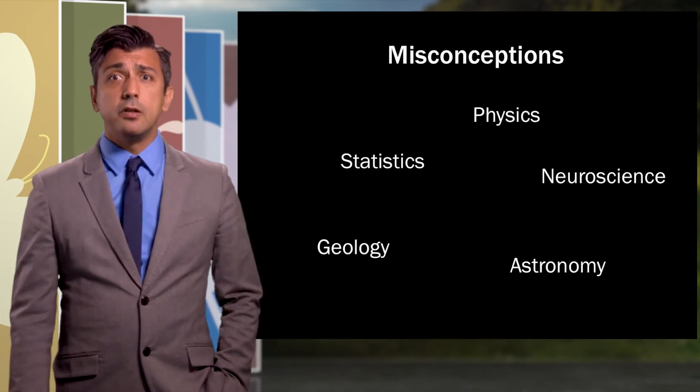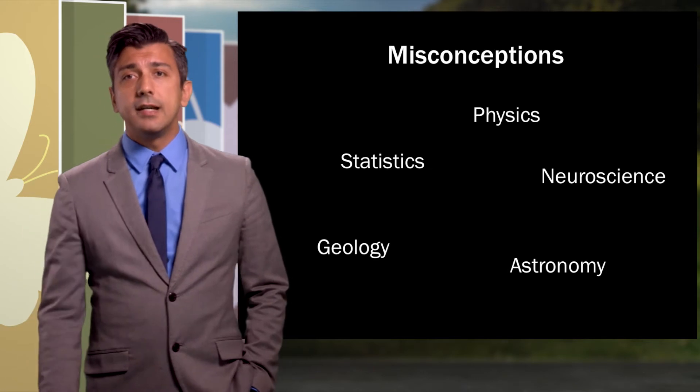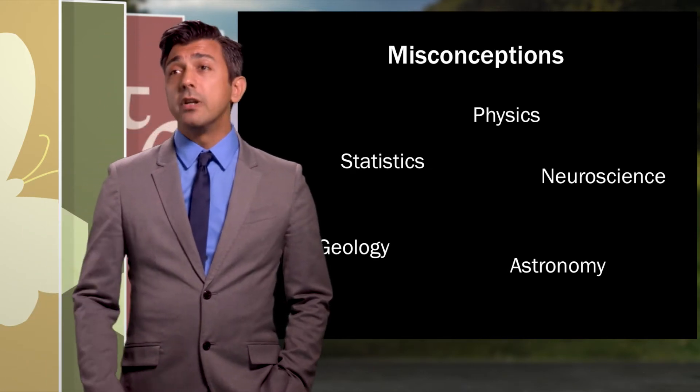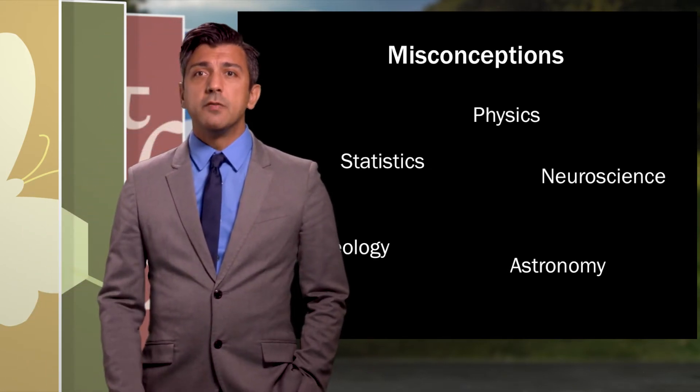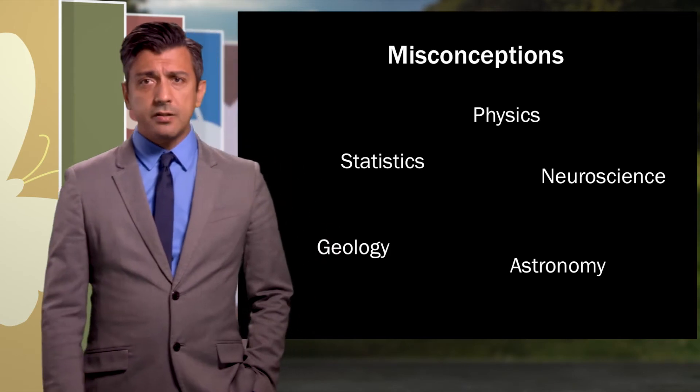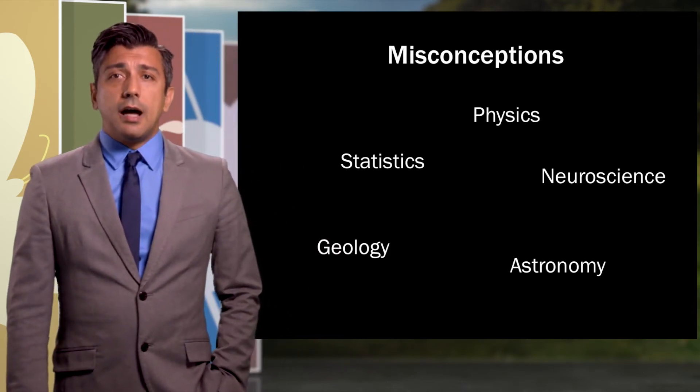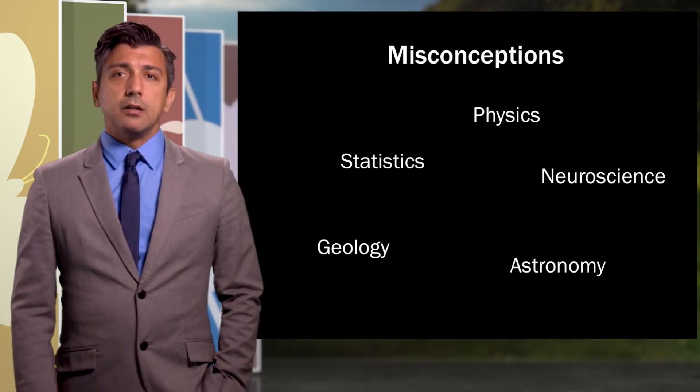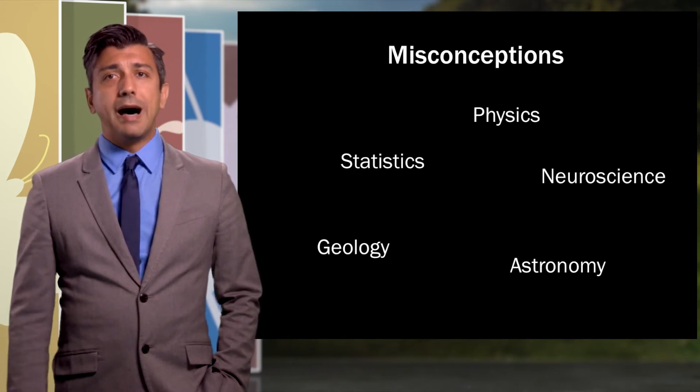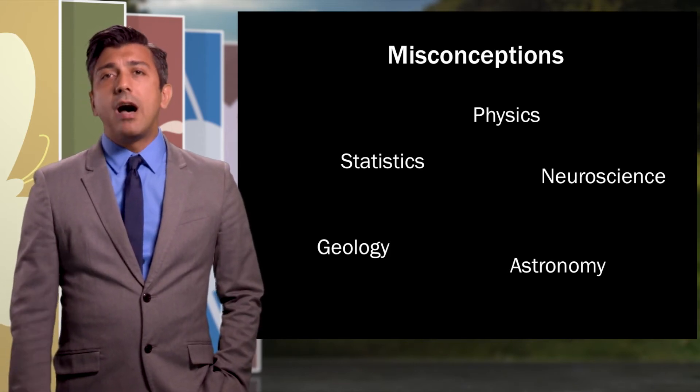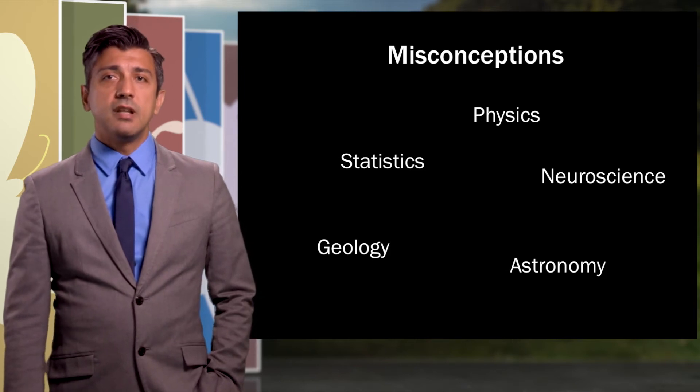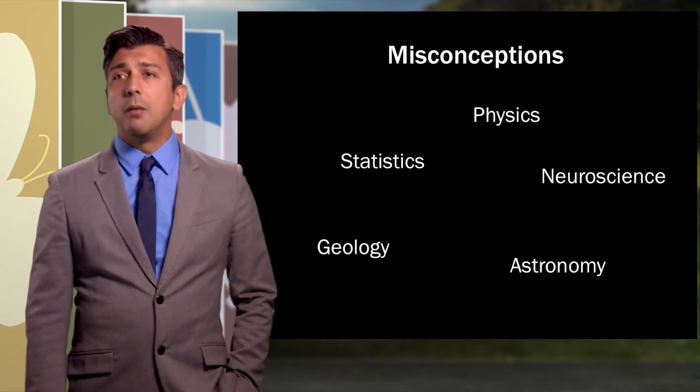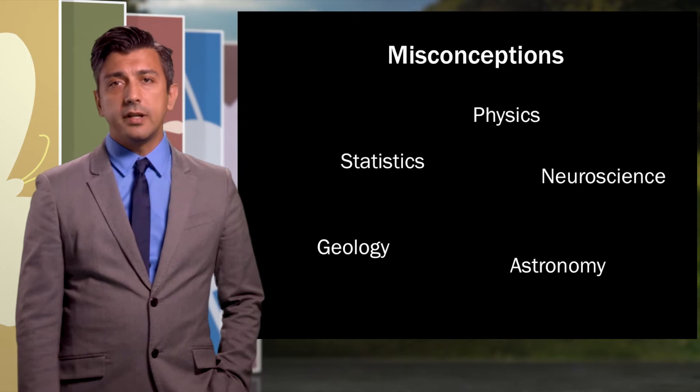And then we see a lot of misconceptions in physics about velocity and acceleration, electricity, and many more natural phenomena. We see misconceptions in neuroscience about the brain. For instance, the idea that the left brain is more linear and the right brain is more creative. So just take a second, if you will, to think about what is one typical misconception that students might have about a topic that you teach in your discipline.